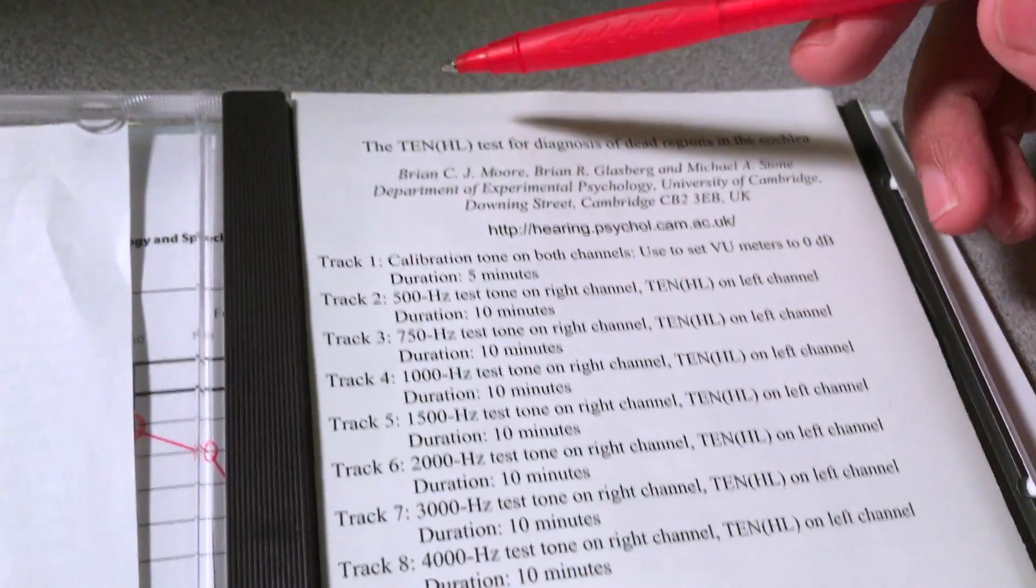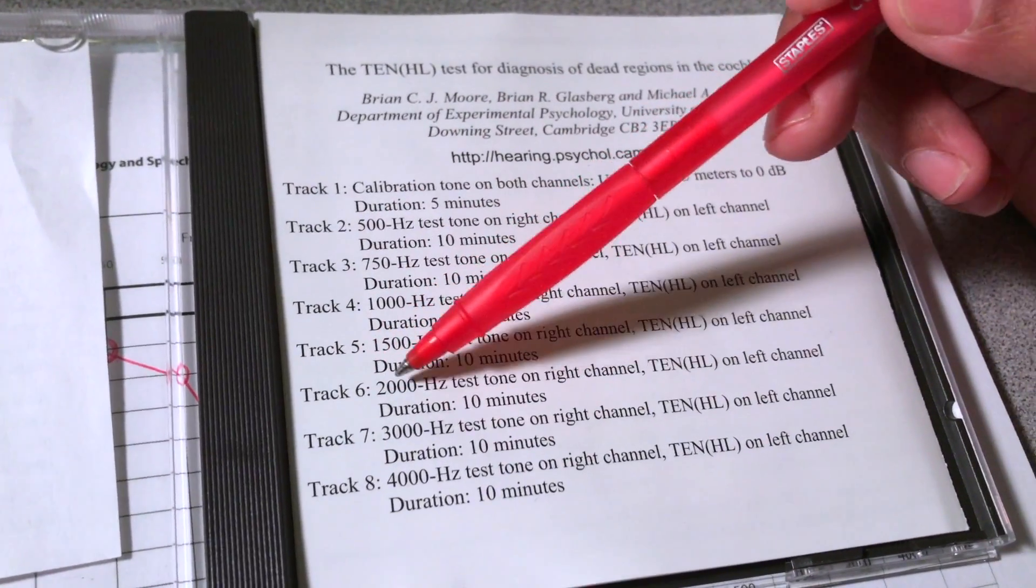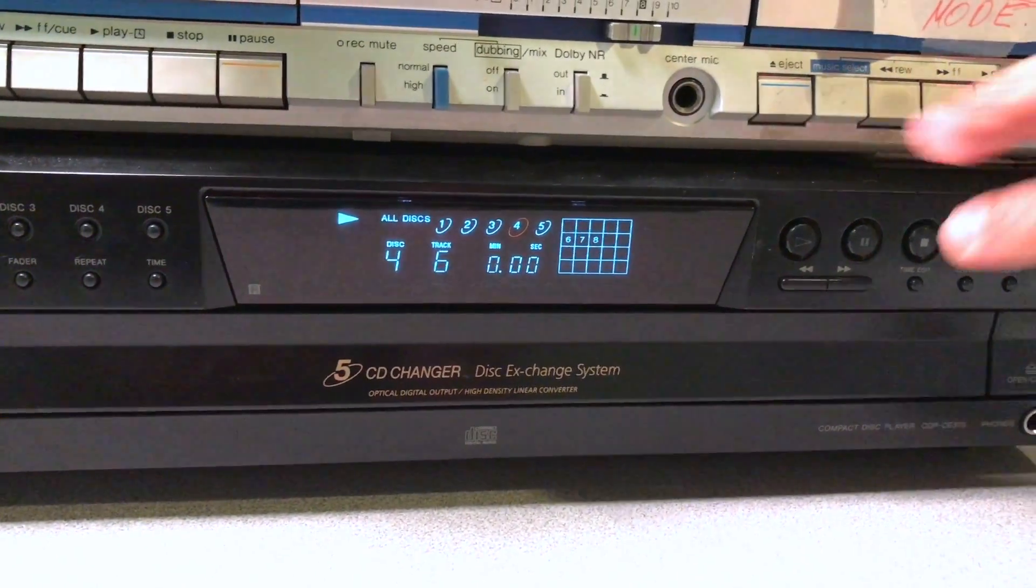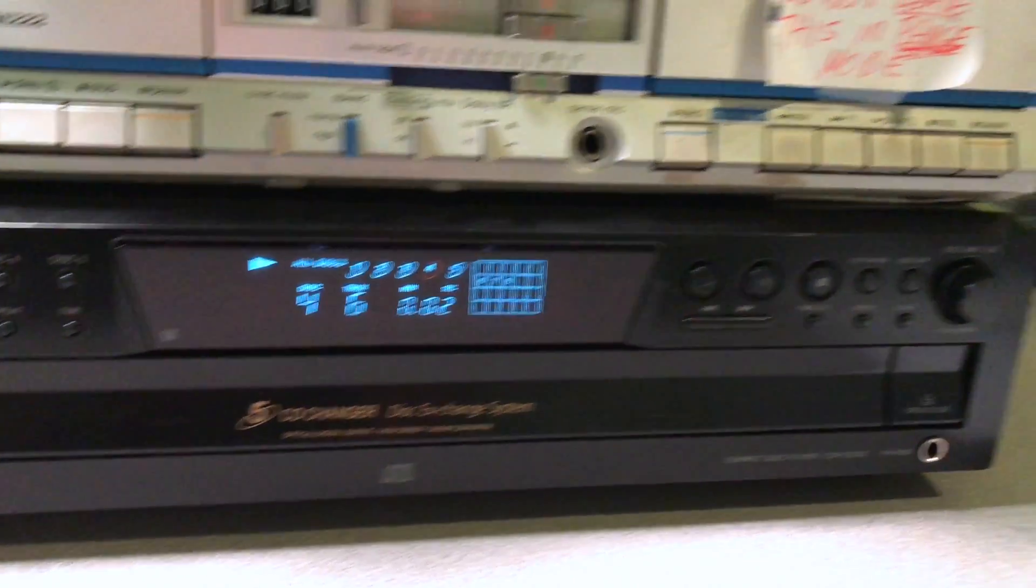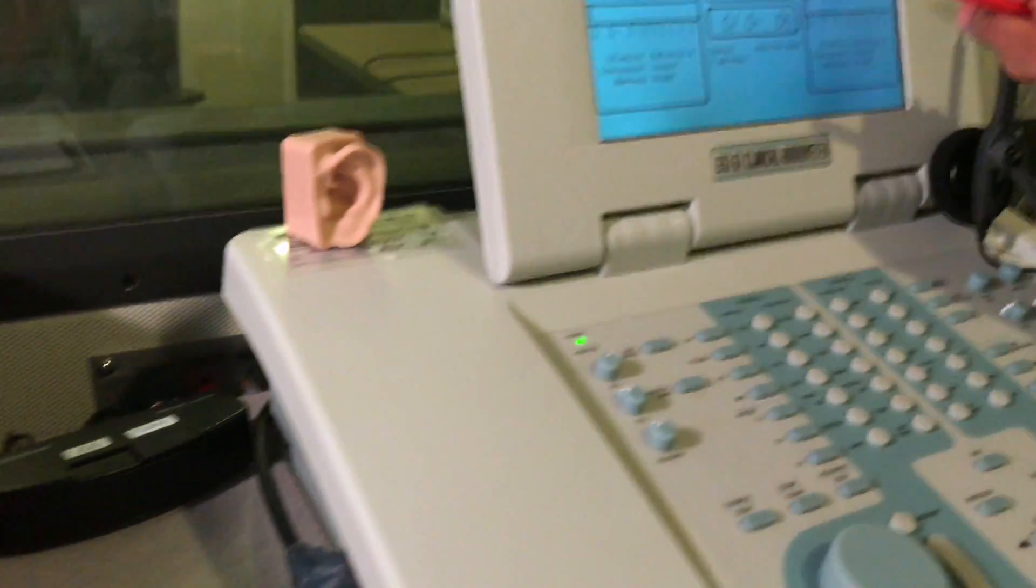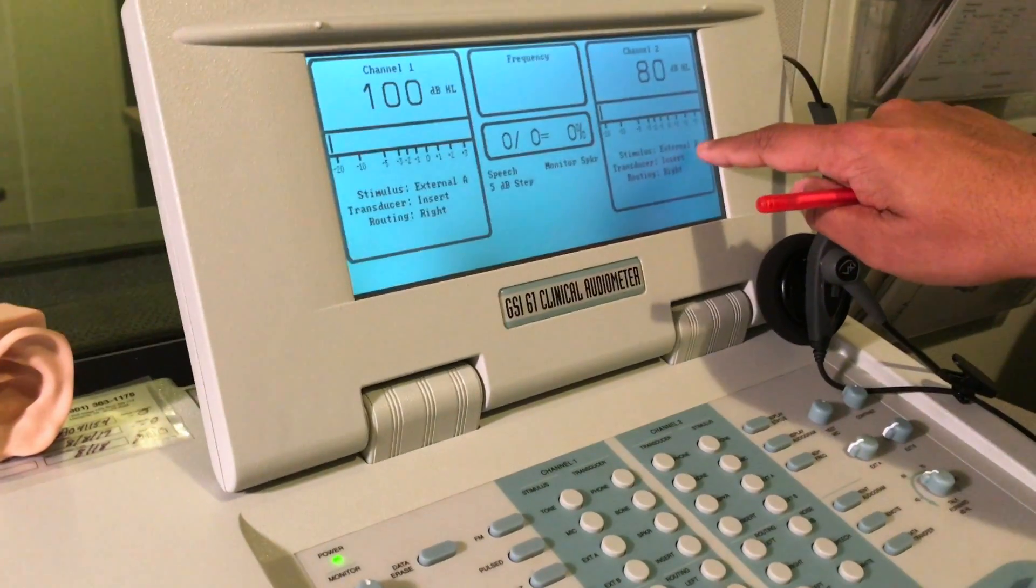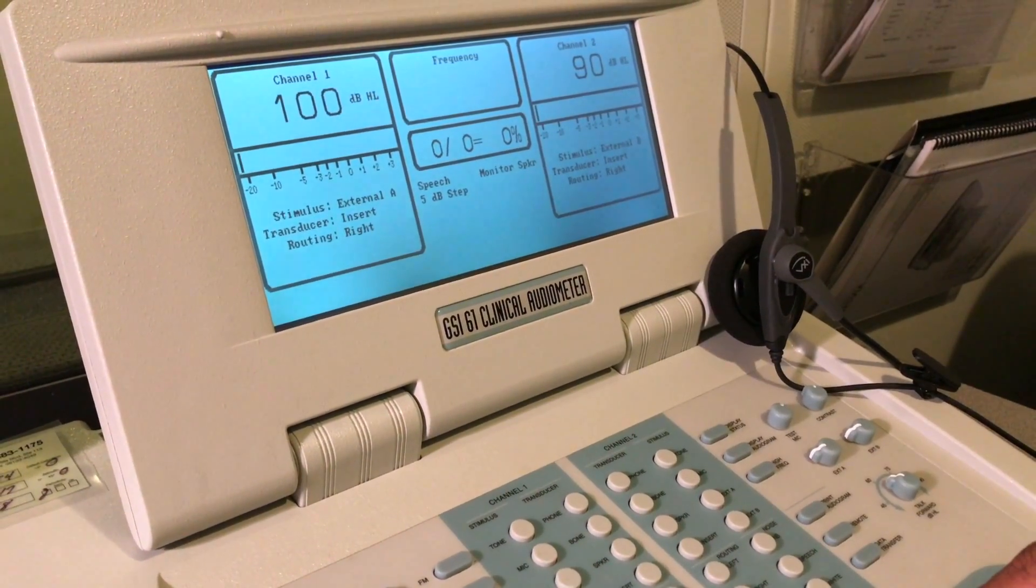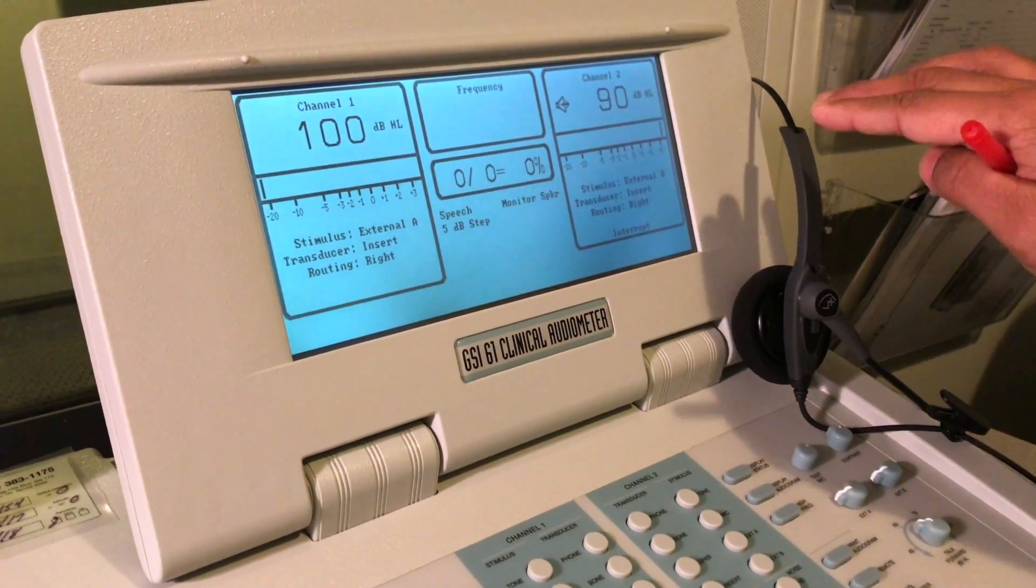On the TEN CD, track 6 is for 2000 Hertz. What you need to do is select track 6 and then play the signal through the CD player. Here on channel 2, you need to select external B and set the intensity of the noise at 90 dB.